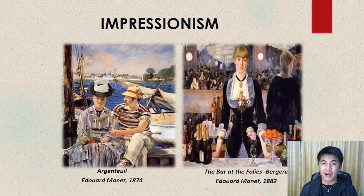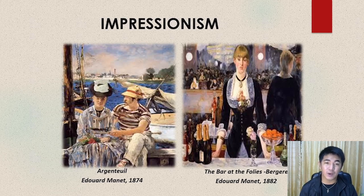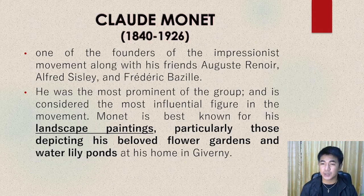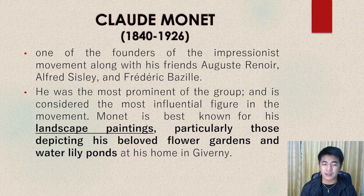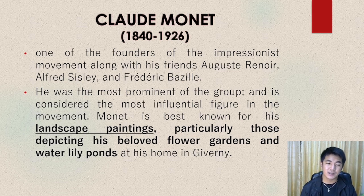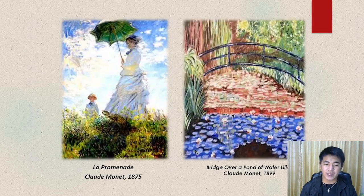Here are some of his artworks. Looking at the outputs on our screen, you can see examples of impressionism — scenes taken at a pier and inside a bar, which happen in everyday life. Second, Claude Monet was one of the founders of the impressionist movement along with his friends Auguste Renoir, Alfred Sisley, and Frederic Bazille. He was the most prominent of the group and is considered the most influential figure in the movement. Monet is best known for his landscape paintings, particularly those depicting his beloved flower gardens and water lily ponds at his home in Giverny. La Promenade and The Bridge Over a Pond of Water Lilies are some of his artworks.